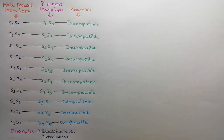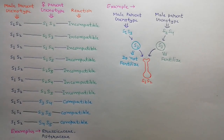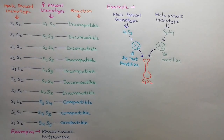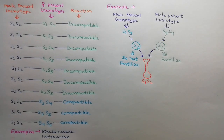Sporophytic self incompatibility is quite common in families like Brassicaceae and Asteraceae. To understand it with another example: here are two male parents, one with genotype S1S3 and another with genotype S3S4. The female parent genotype is S1S2. The S3 pollen grain from male parent S1S3 does not fertilize the female parent, while the S3 pollen grain from male parent S3S4 does fertilize the female parent. Hence, this incompatibility is controlled by the genotype of the male parent plant.